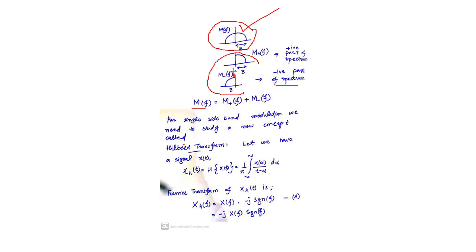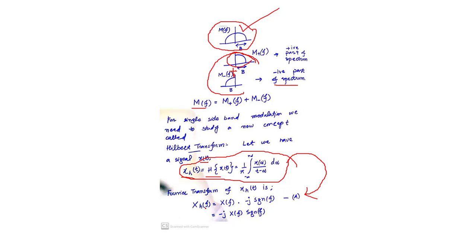For single sideband modulation, we need to study a new concept called the Hilbert transform. According to the Hilbert transform, if we have a signal x(t), then x_h(t) is the Hilbert transform of x(t), represented as: H{x(t)} = (1/π) integral from -∞ to +∞ of x(α)/(t - α) dα. The Fourier transform of x_h(t) is: X_h(f) = X(f) · (-j · sgn(f)).